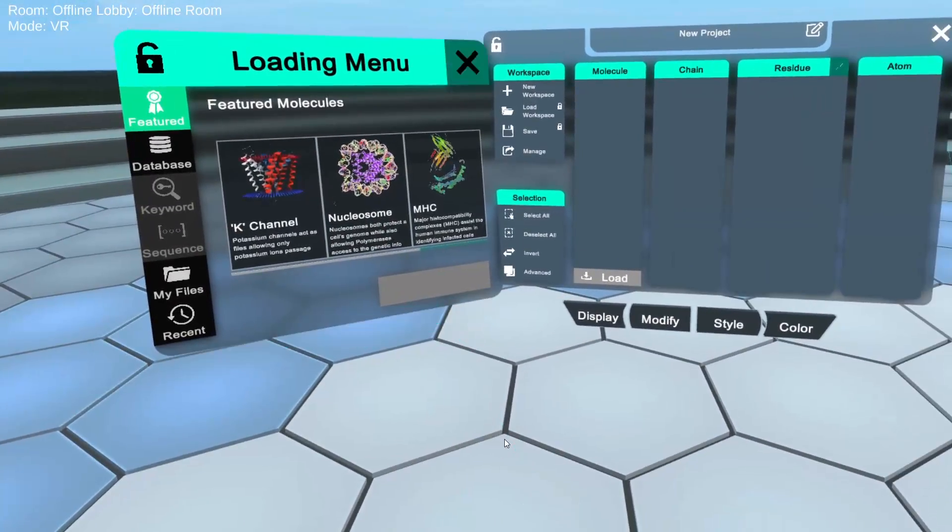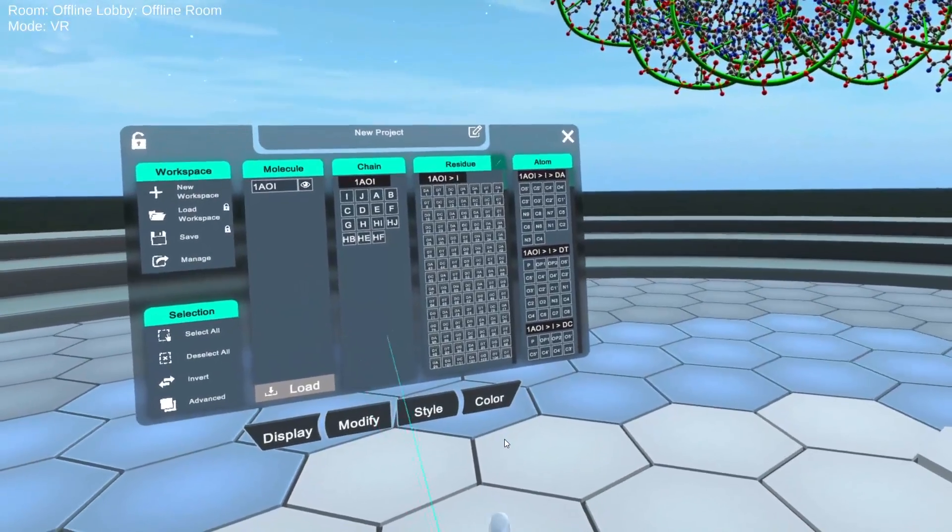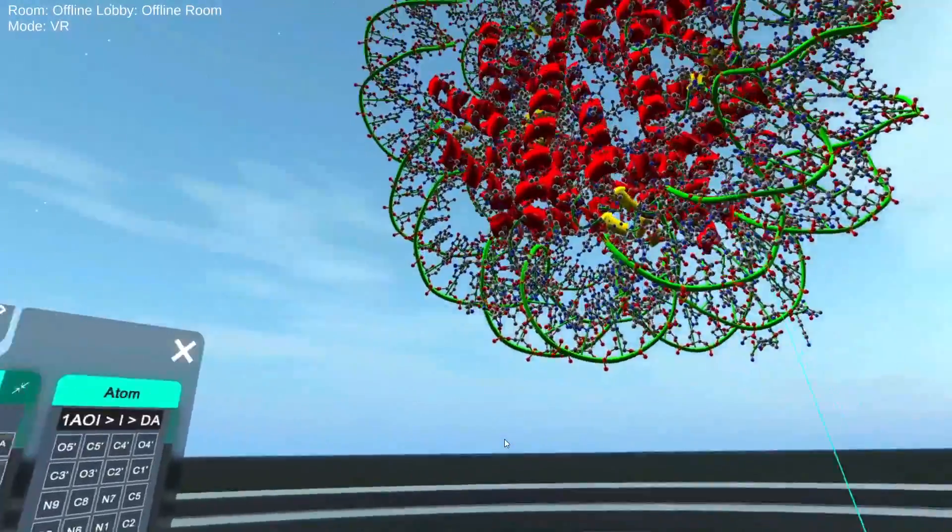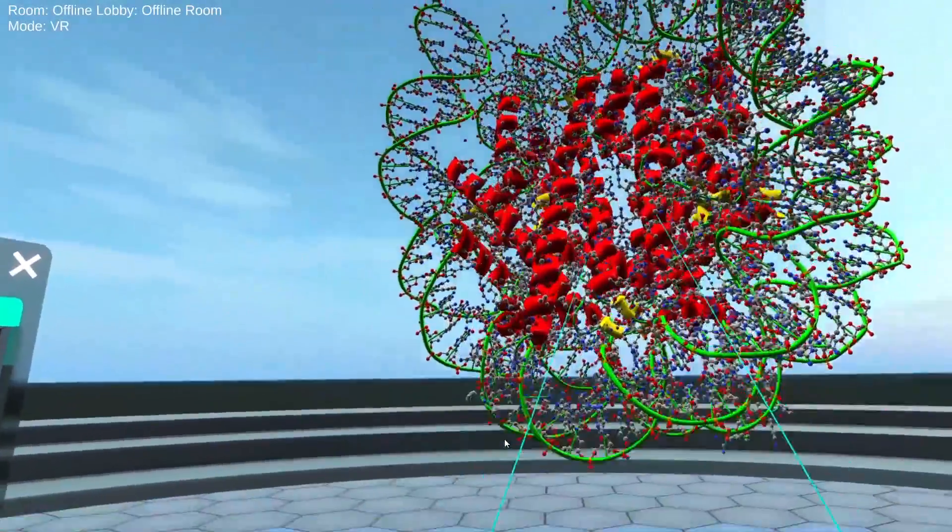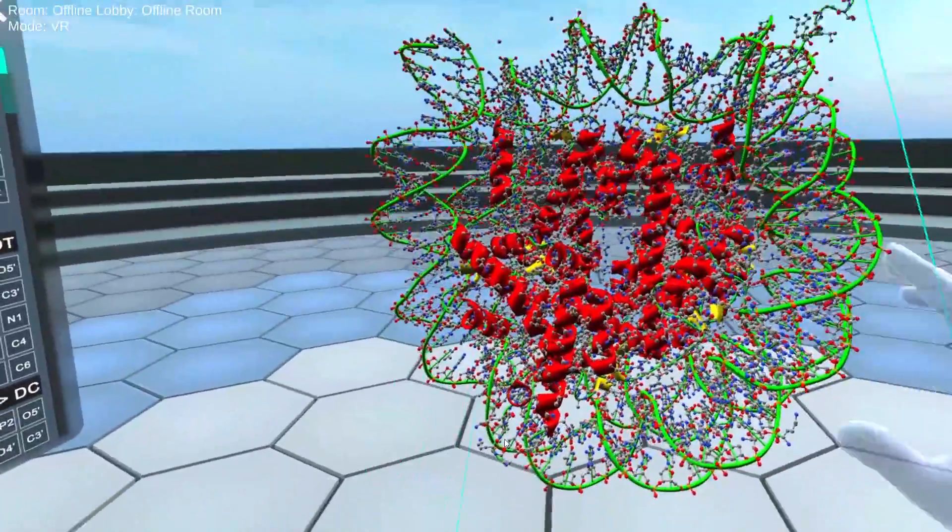So last time we looked at DNA and now we want to understand a little bit better how DNA is packaged in the cell. So in the biochemistry series we did talk about nucleosomes quite a bit, the way the DNA wraps around histones as we can see here.